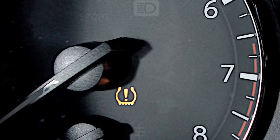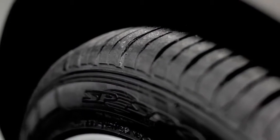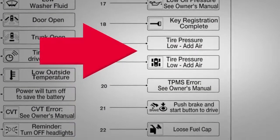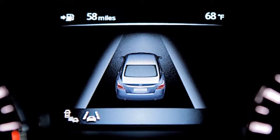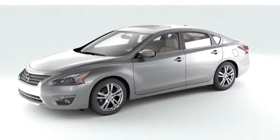The Tire Pressure Monitoring System monitors tire pressure. A tire pressure low add air warning message will appear in the vehicle information display and the low tire pressure warning light will illuminate when one or more tires are low on pressure and air is needed.